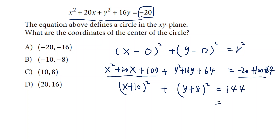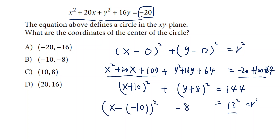Now it becomes 144. We can see 144 is 12 squared, so this is r squared, meaning the radius of the circle is 12. The center is negative 10 and negative 8 — it's like x minus negative 10 squared plus y minus negative 8 squared equals r squared. So the center is (-10, -8).